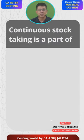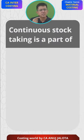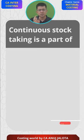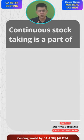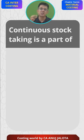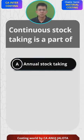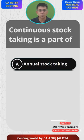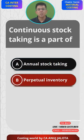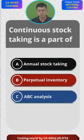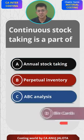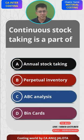Continuous stock taking is a part of — continuous stock taking means you physically count the stock in order to ensure that the physical stock matches what is as per your SLC account. The options are: A) Annual stock taking, B) Perpetual inventory, C) ABC analysis, and D) Bin cards. This is easy — think about it.